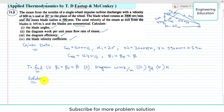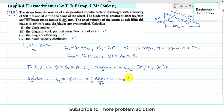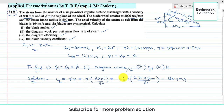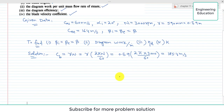We will first find the blade velocity C_B. C_B equals r times omega, where omega equals 2*pi*N divided by 60. Putting in the values: r = 0.59 meters, N = 3,000 RPM. Simplifying, we get C_B = 185.4 meters per second. This is the blade velocity, sometimes called blade speed.